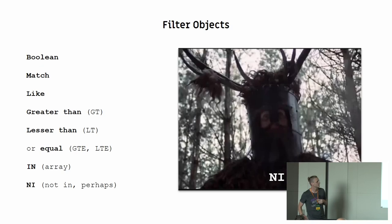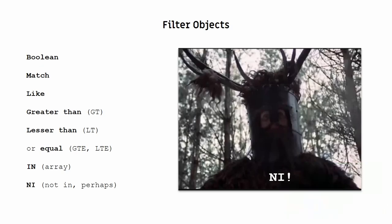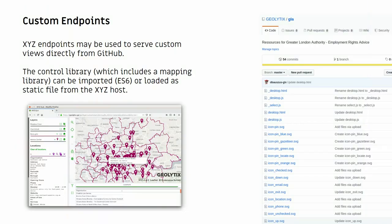Other objects are filter objects — standard filters: Boolean match, greater than, lesser than, equal, in an array, or NI. There are also style objects, but as we're running out of time we can't really go into detail, and it's not well-defined yet how styles work on different render platforms.